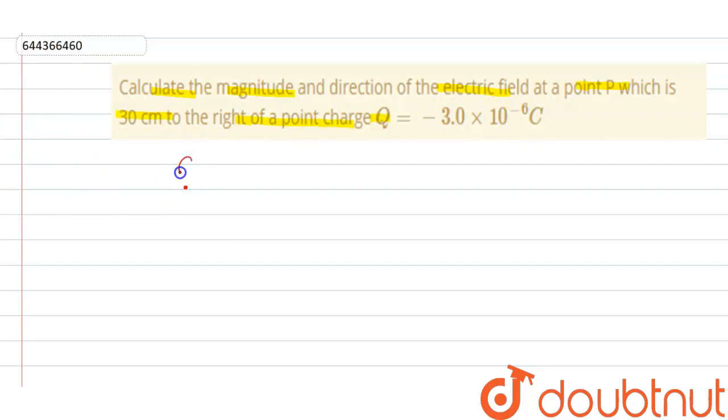So in this question, there is a charge Q and a point P, and we have to find the electric field intensity at that particular point along with direction. The distance is given as 30 centimeters, that means 0.3 meters. Now to determine electric field intensity, we have a formula